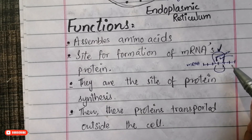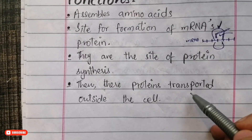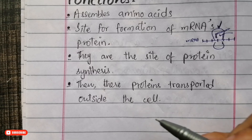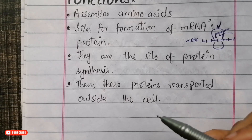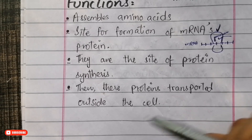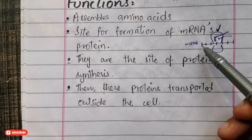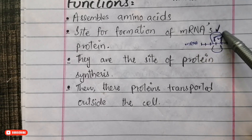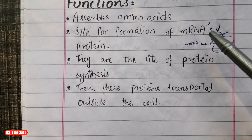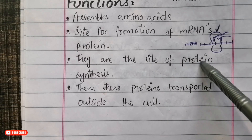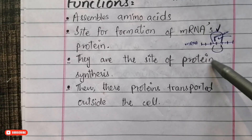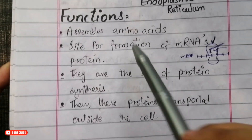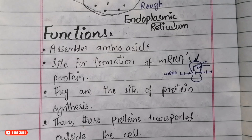Ribosomes are basically the factories where proteins are synthesized. These proteins are then transported outside the cells, since all functions in our body are performed by specific types of proteins. When numerous messenger RNA molecules translate their messages into polypeptide chains in parallel, the newly formed protein chains are transferred inside or outside the cell to perform their required functions. Ribosomes provide the site and important enzymes to carry out protein synthesis.